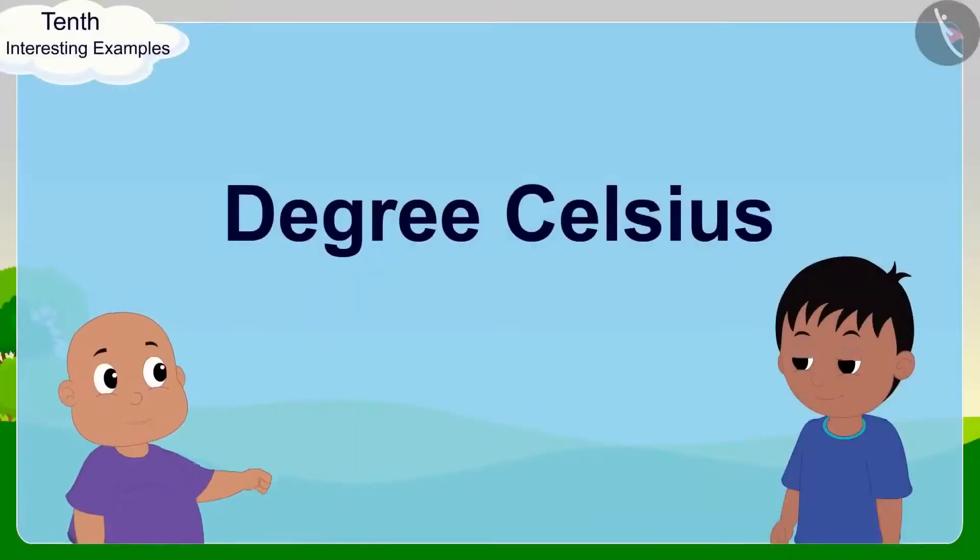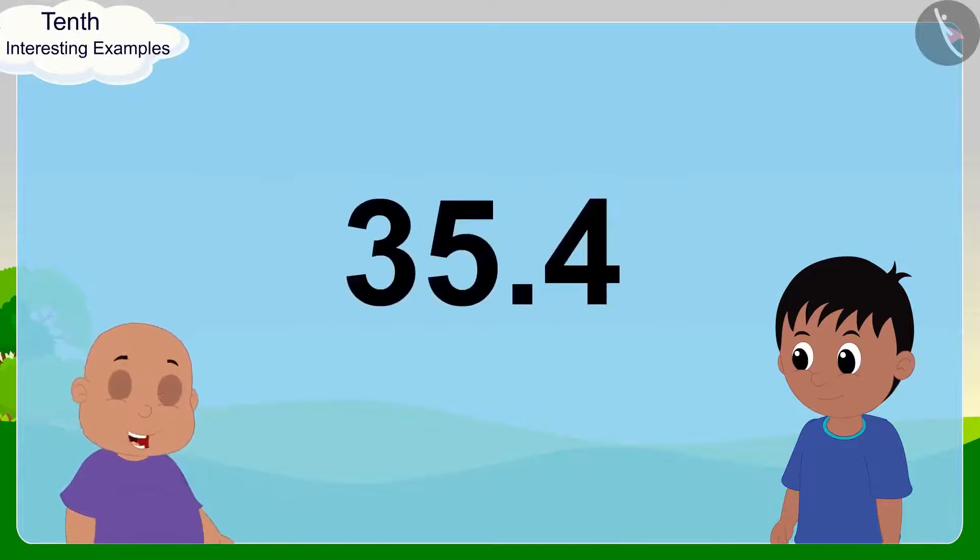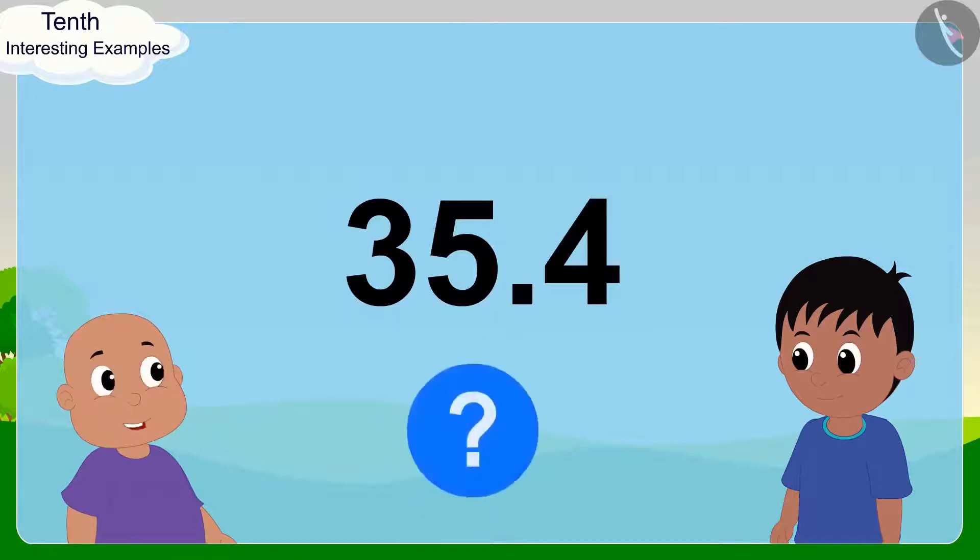Raju explained to Babalu. Okay. I understood degree Celsius. 35.4 degrees Celsius. Raju, 35 is fine. But what is this 0.4? Babalu asked Raju.